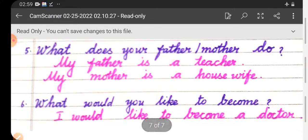Then fifth one, what does your father and mother do? My father is a teacher. My mother is a housewife. In this answer, according to your parents' profession, you can write. Sixth one, what would you like to become? I would like to become a doctor. In this answer also, according to your aim, you can write the profession.